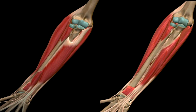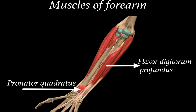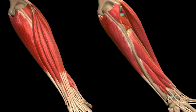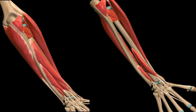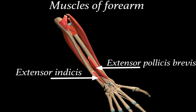When we remove flexor pollicis longus and flexor digitorum superficialis, we find pronator quadratus and flexor digitorum profundus. On the posterior aspect of the forearm, removing all extensor muscles reveals extensor pollicis longus and abductor pollicis longus. Removing those reveals extensor indicis and extensor pollicis brevis. Note that not all forearm muscles need to be memorized — focus on the most important ones for your exam.